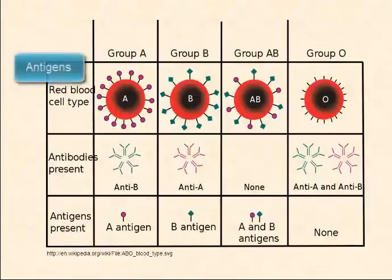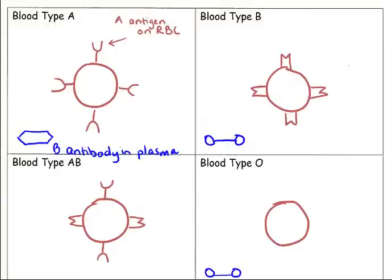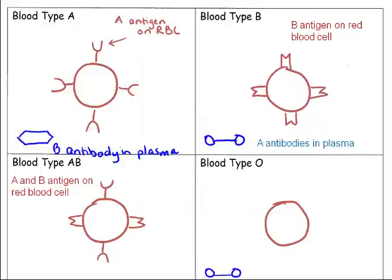It's important to note that the red blood cells have the antigens, and the antibodies are present in the plasma in which the red blood cells flow. A person with blood type A has antigen A on the surface of the red blood cells and antibody B in their plasma. A person with blood type B has the B antigen and the A antibodies. A person with AB has A and B antigens on the red blood cell and no antibodies in the plasma. And a person with blood type O has no antigens on the red blood cell and A and B antibodies in the plasma.